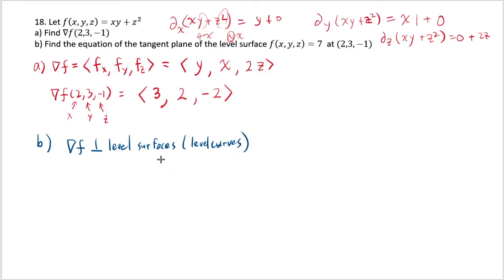So that means since this vector 3, 2, negative 2 is our gradient, this would be perpendicular to the level surface f(x,y,z) equals 7.